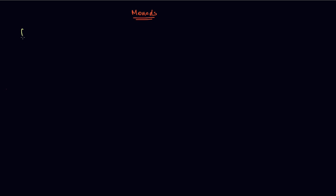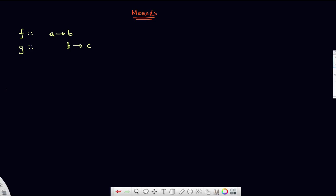Let's assume I've got a function f, whose type goes from a to b. And let's say I've got another function g that happens to go from b to c.